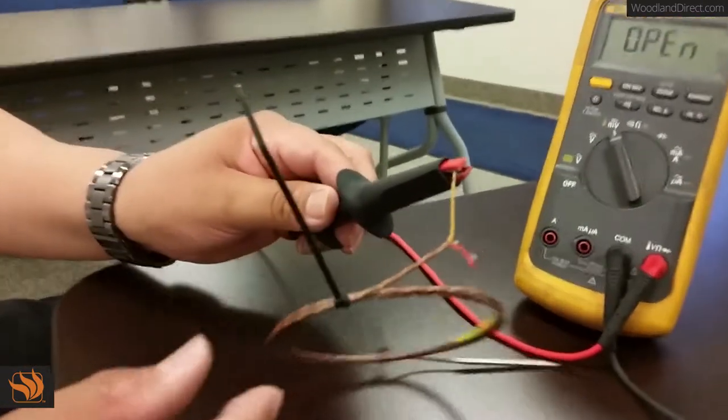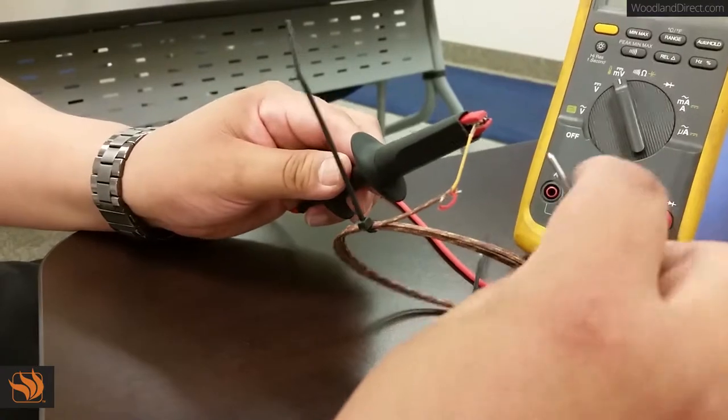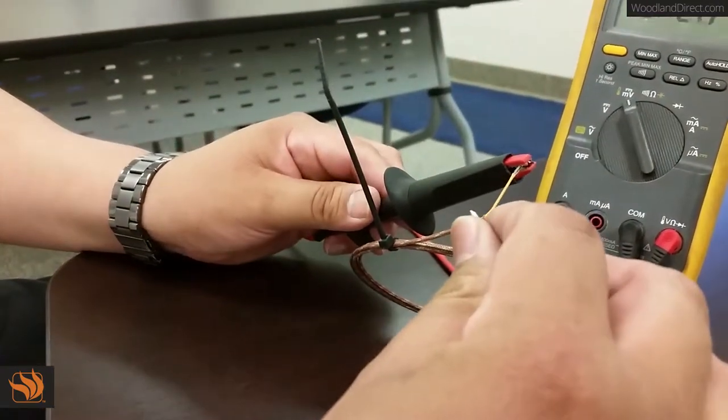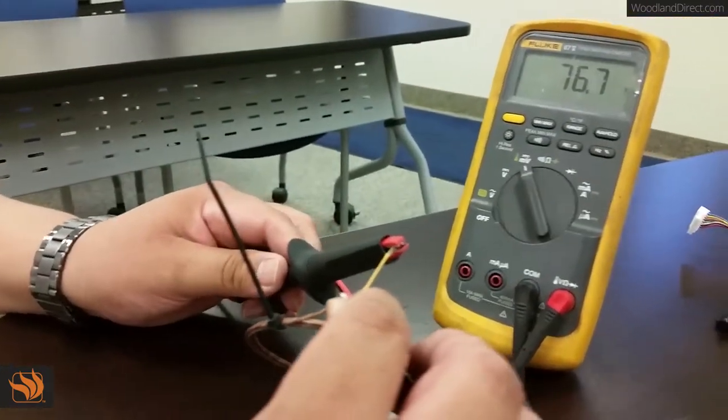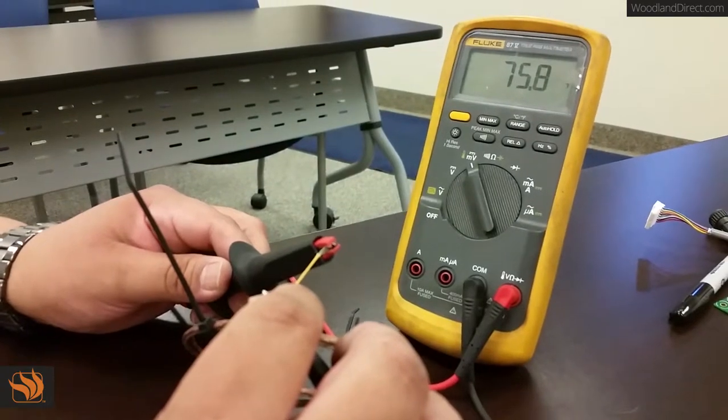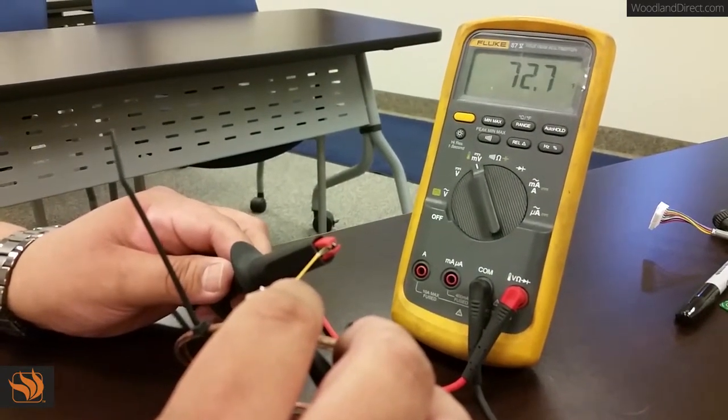Yellow is always positive. Red is negative. As soon as you make contact, you should at least read a room temperature. In this case, it's room temperature, it's pretty cool.